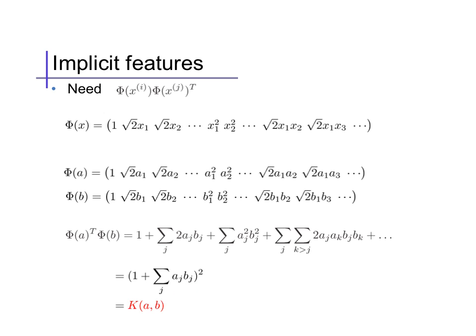1 plus the sum of ajbj squared. Or, take the dot product of the original feature vectors a and b, add 1, and then square the whole thing. This is straightforward to verify with a bit of effort, and a similar relationship holds for higher degrees as well.